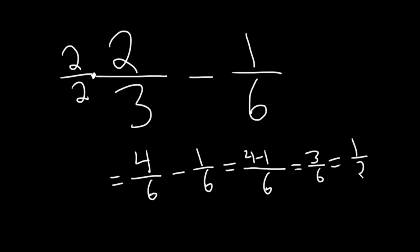which is the same thing as 1 half. It actually simplifies to 1 half. So 2 thirds minus 1 sixth is actually equal to 1 half. So hopefully this has been helpful to someone out there. Good luck.